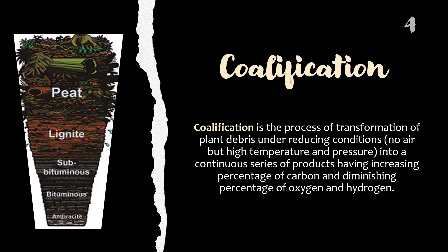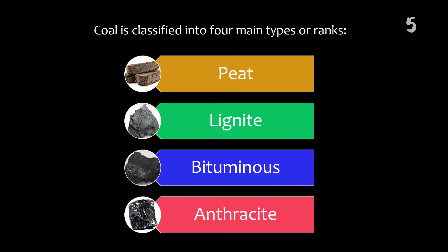Coalification is a process of transformation of plant debris under reducing conditions — no air but high temperature and pressure — into a continuous series of products having increasing percentage of carbon and diminishing percentage of oxygen and hydrogen. The ranking of coal depends on the types and amounts of carbon the coal contains and on the amount of heat energy the coal can produce, which dictates the quality of coal. Higher quality coal produces less smoke, burns longer, and provides more energy than lower quality coal.